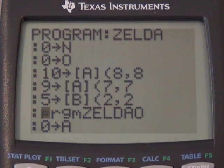And here's where we call Zelda O. So depending on what the coordinates are at Zelda O, we should store different things into the matrix. So right now we have a 10 at 8, 8. 9 at 7, 7. And a 5 at 2, 2.